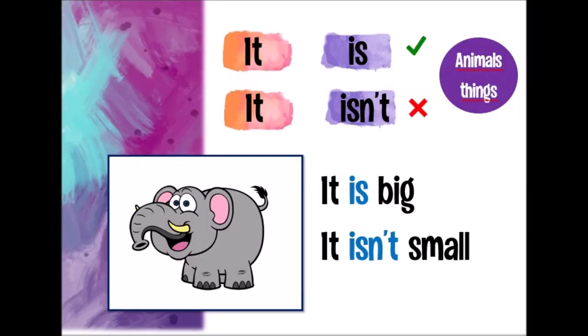If we talk about things or animals, we say it. It is or it isn't. For example, look at the elephant. It is big. It is big. It isn't small. It isn't small.